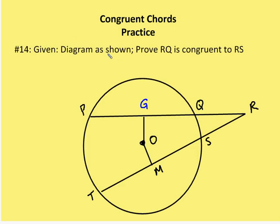The first problem: the diagram is shown for circle O. I know that PQ is congruent to TS, and I'm going to prove that RQ and RS are congruent.